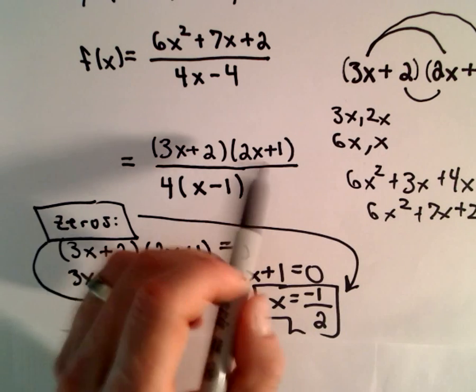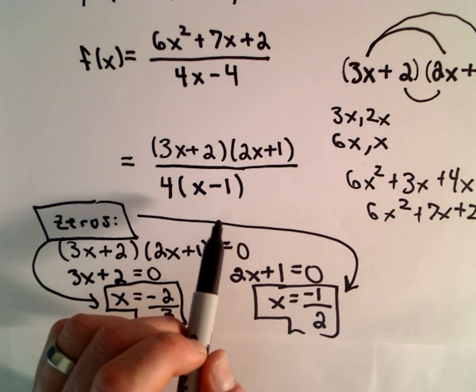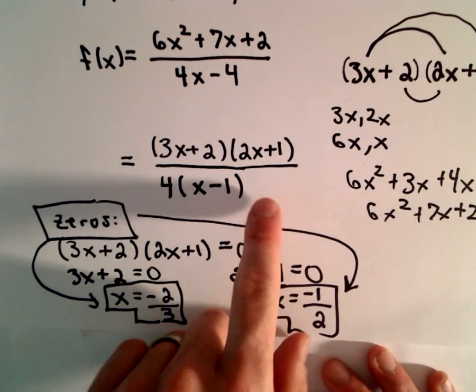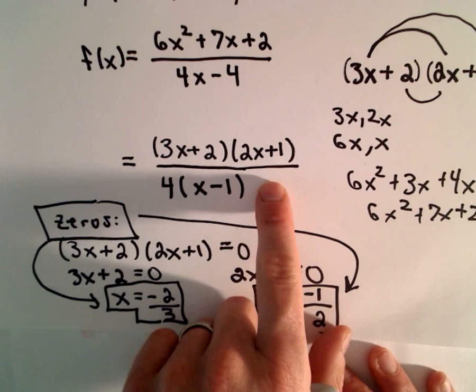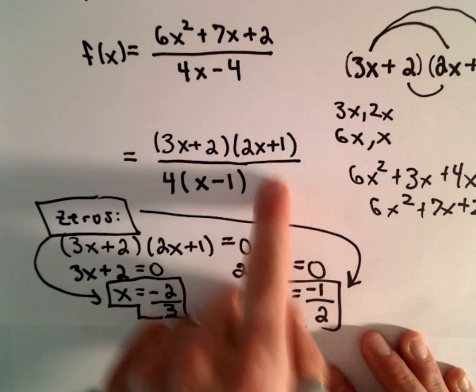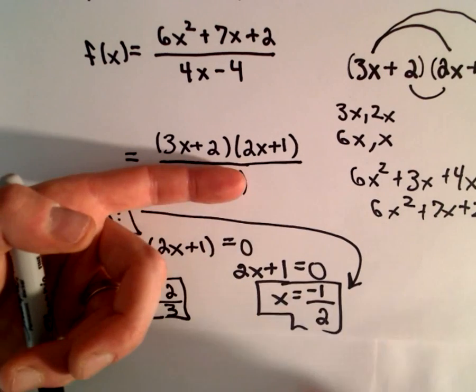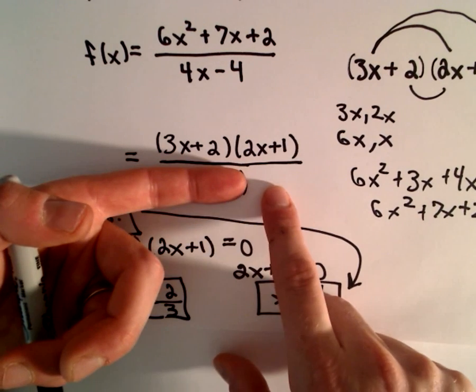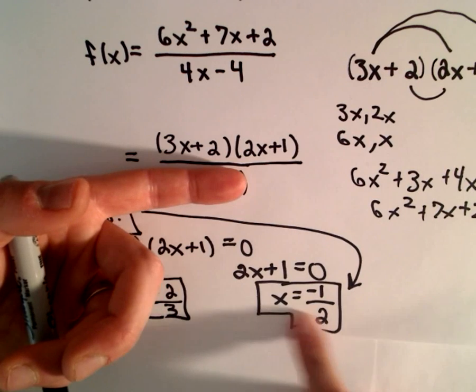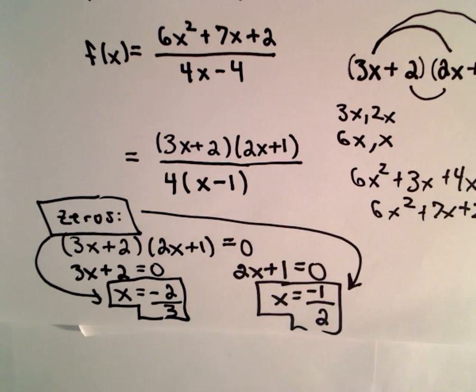Now, you have to be careful. If there had been a common factor, for example, suppose that there was also a 2x + 1 in the denominator. Well, if that happens, x = -1/2 wouldn't be a 0 because you would also get 0 in the denominator. You would also get a 0 in the denominator at x = -1/2 and then it would be undefined.